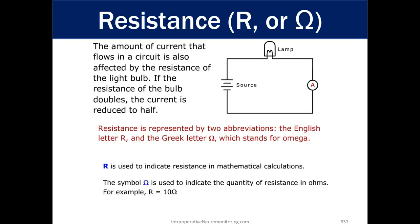Resistance is R or the omega sign. The amount of current that flows in a circuit is also affected by the resistance of the light bulb. If the resistance of the bulb doubles, the current is reduced to half. Resistance is represented by two abbreviations, the English letter R and the Greek letter omega. R is used to indicate resistance in a mathematical calculation where the omega sign is used to indicate quantity of resistance in ohms. For example, the resistance is 10 ohms.